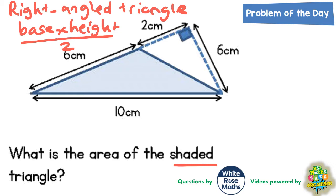But there is another way we could do it. We could realize that there is a large right-angle triangle here that I've highlighted in red, and then there's a smaller one inside which is highlighted in green. If we work out the area of the large red right-angle triangle and subtract the area of the smaller green right-angle triangle, then the area that would be left would be the blue shaded triangle that's been asked for in the question.